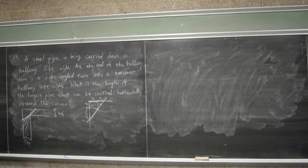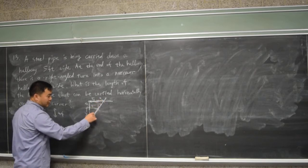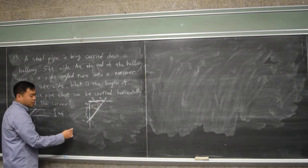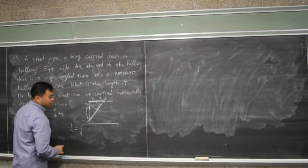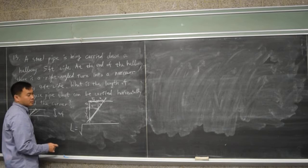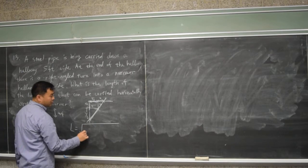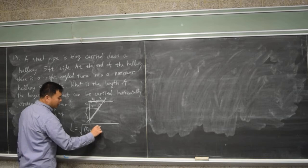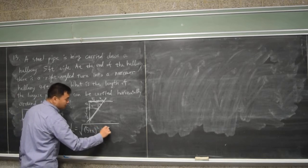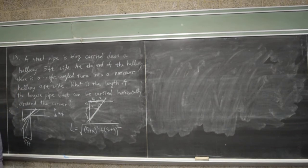What is the target function? This length, right. L equals the square root of five plus x, squared, plus four plus y, squared. But it is a function of two variables, so you need the relationship between x and y.